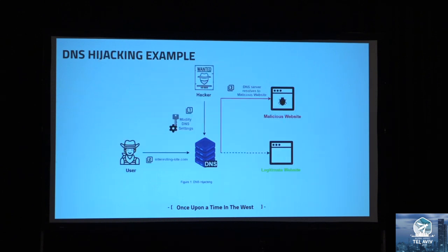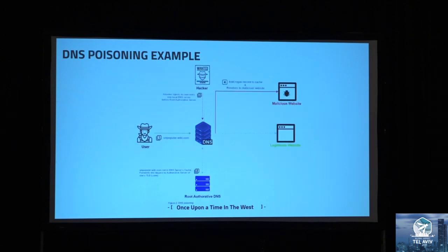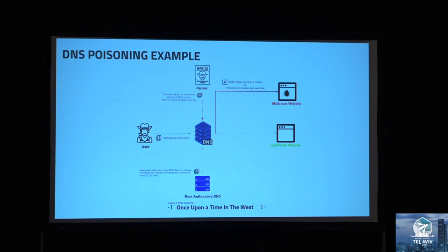We also have a simplified example of DNS hijacking. In this example, the hacker has a way to modify the DNS settings — let's say they compromised the domain owner. The user trying to access a modified site gets redirected to a malicious website instead of the legitimate one. In the DNS poisoning example, the user tries to access an unpopular site not in the DNS cache, the DNS server queries the root authority, and the hacker introduces a rogue DNS record before the authority answers. That rogue record gets cached and the user is redirected to a malicious website.